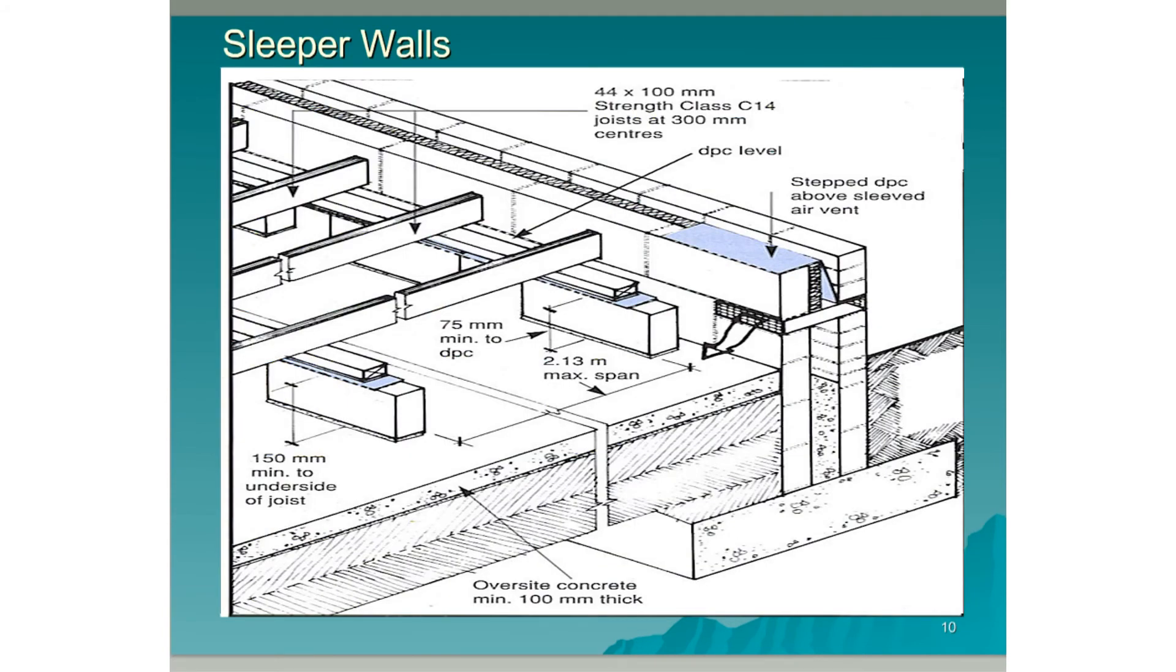Here we have a diagram of some sleeper walls. Blocks are placed on top of the oversite concrete with large gaps between each block that form the sleeper walls. This is in order to allow air to circulate freely all around the sleeper walls and to be able to aerate all the timbers in the floor.